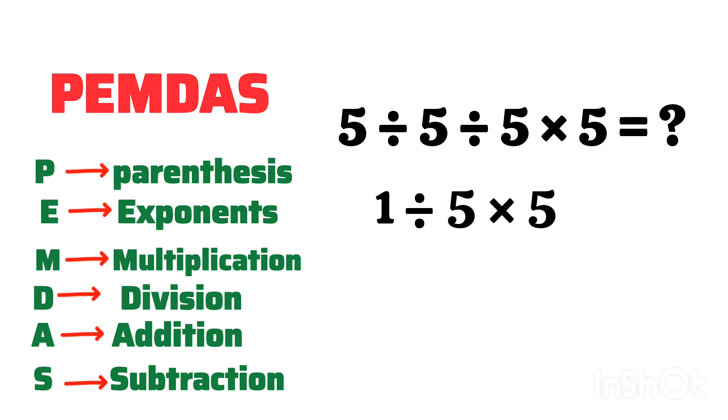Okay, so as we are following order of operations, we need to go from left to right. Right? So 1 divided by 5 can be written as 1/5. I know you got this point, and the remaining on the left is times 5.